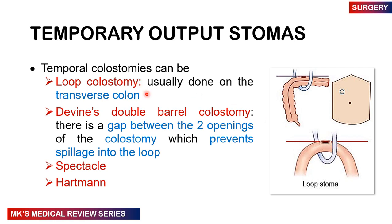Temporal colostomies can be a loop colostomy, usually done on the transverse colon; a divided double barrel colostomy, where there is a gap between the two openings on the skin to prevent spillage into the loop; a spectacle colostomy; and a Hartmann type of colostomy.